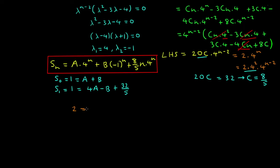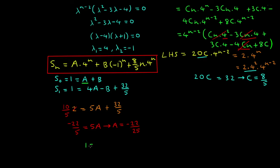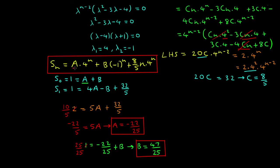Adding the two equations, b minus b = 0, and we get 2 = 5a + 32/5. Since 2 = 10/5, we have 10/5 minus 32/5 = -22/5 = 5a, so a = -22/25. Substituting back, 1 = -22/25 + b, and since 1 = 25/25, we get b = 47/25. These constants give us the specific solution to the recurrence relation.